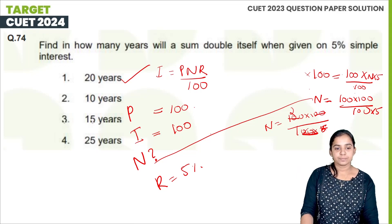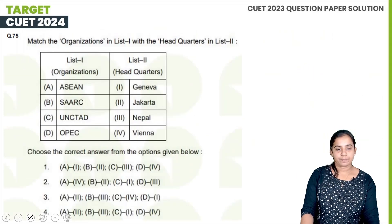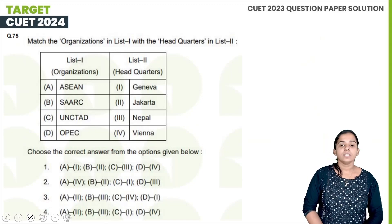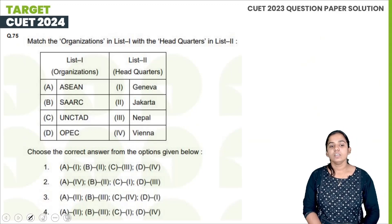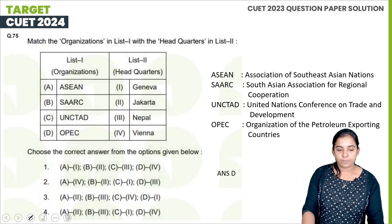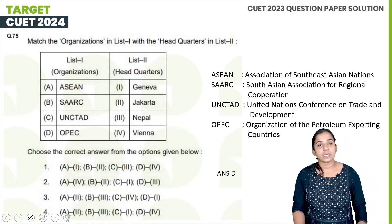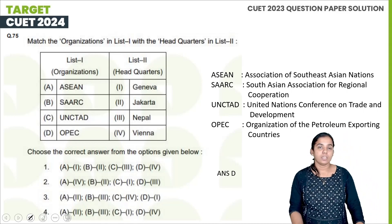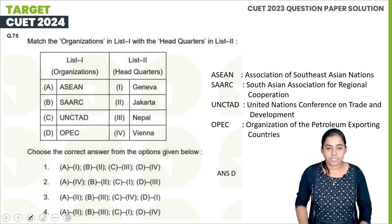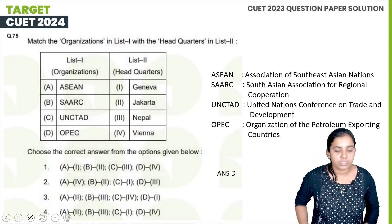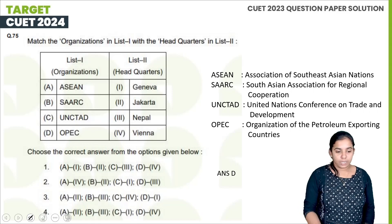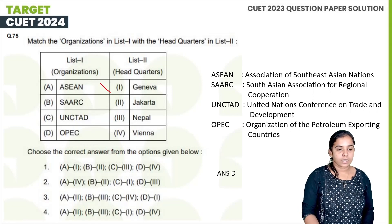So the answer is A. Now let's talk about headquarters. First is ASEAN — the Association of Southeast Asian Nations. Its headquarters is at Jakarta.